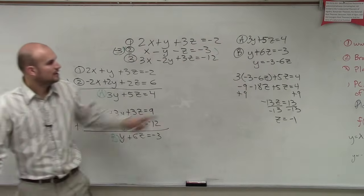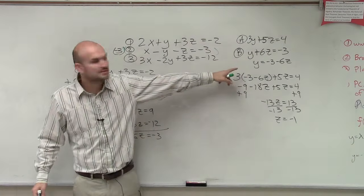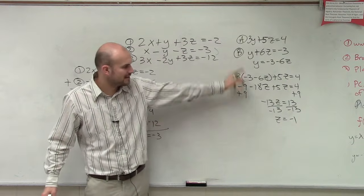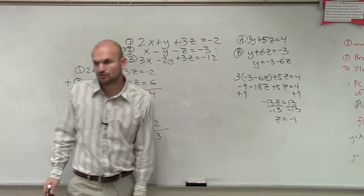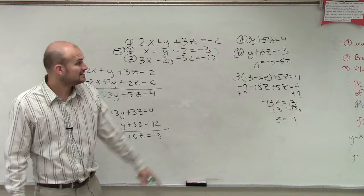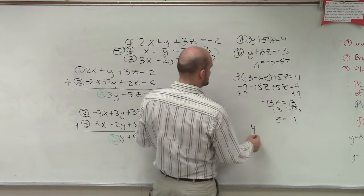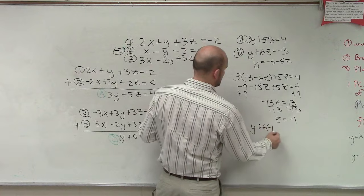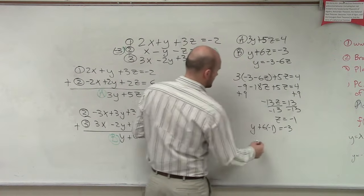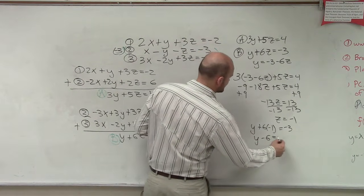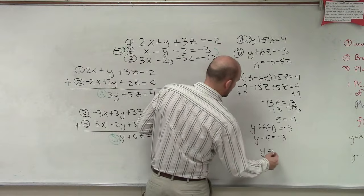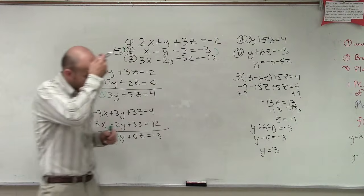So when I plug in, when I solve b for y equals, for y, I plug it into the other equation and I eliminate. I get z equals negative 1. Then, since I know what z is, now I can plug in negative 1 in for z. And I get y minus 6 equals negative 3, y equals 3 when I solve there.